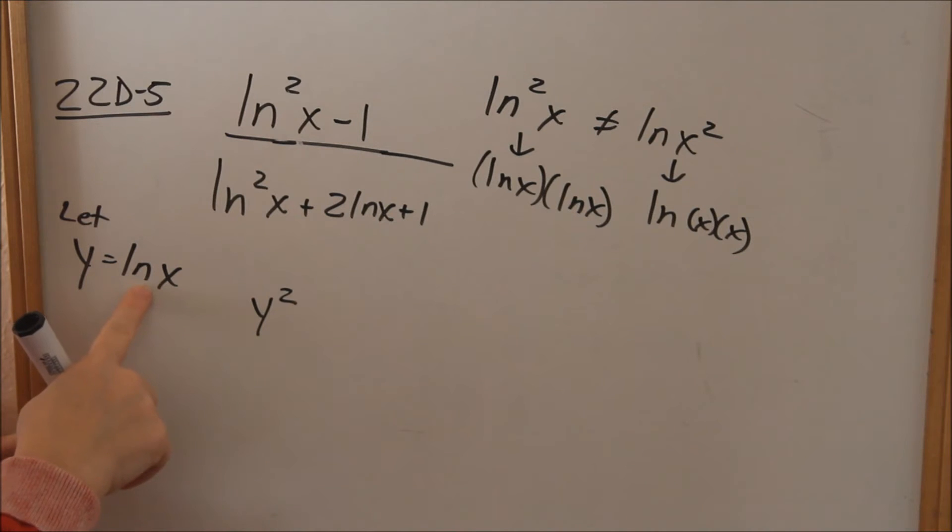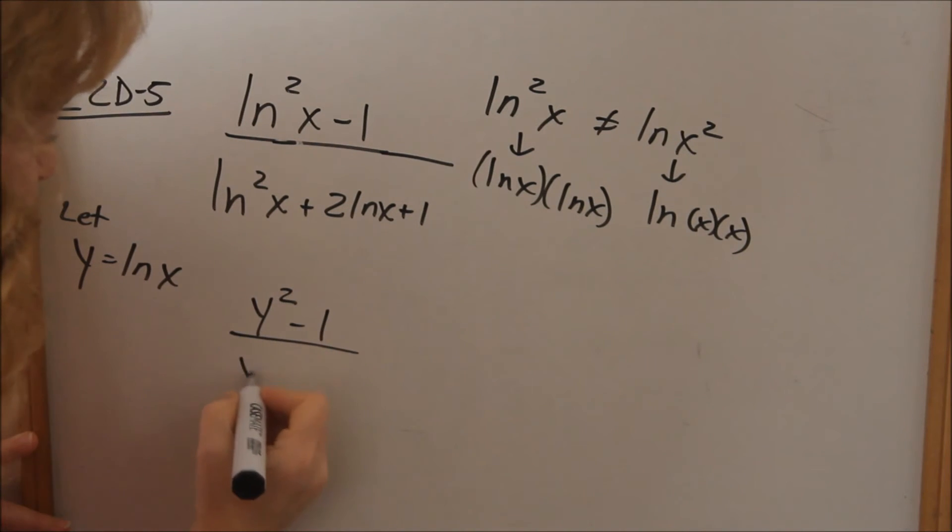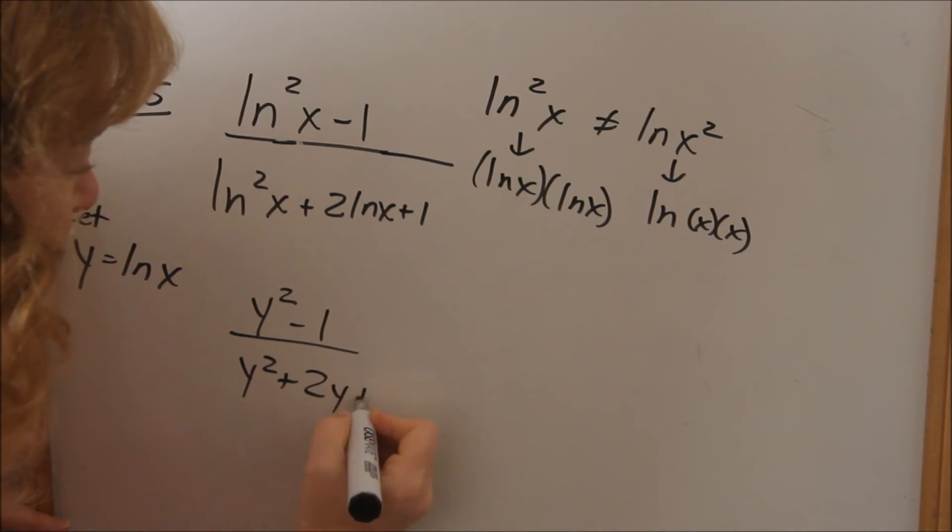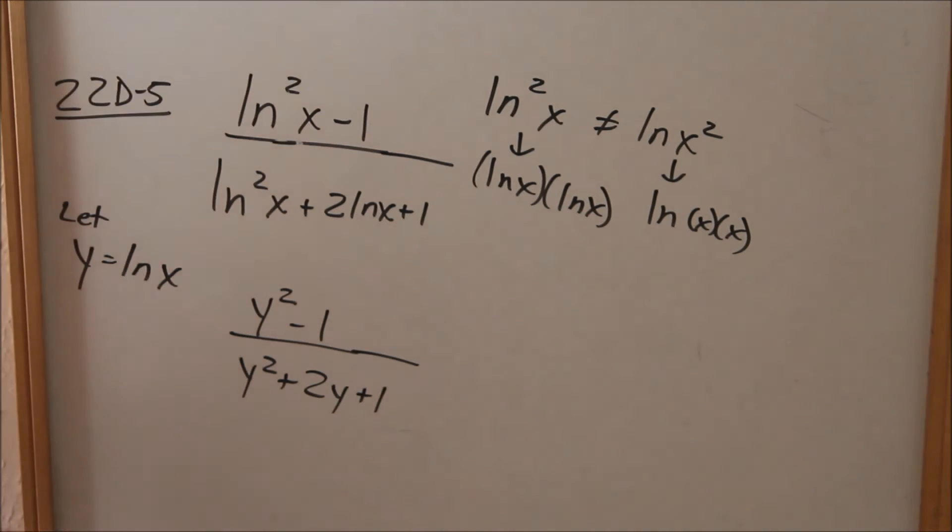Because that would be ln x times ln x, which is y^2, minus 1. The denominator would be y^2 + 2y + 1.